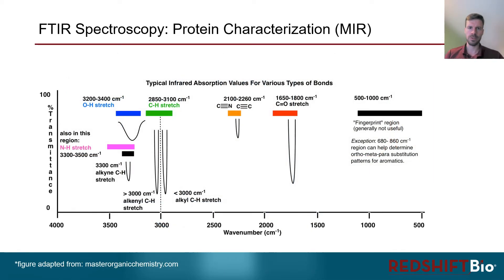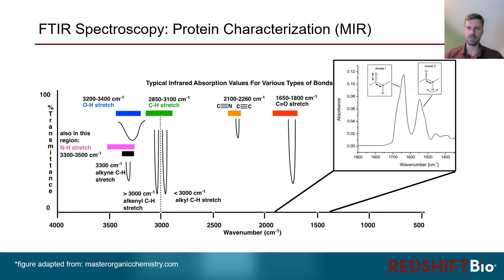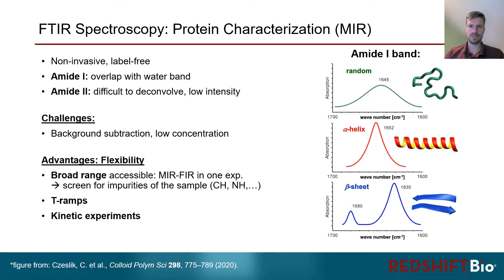Typical infrared absorption bands of various types of bonds are presented here in this figure, and they can all be used for understanding the structure and composition of your sample. But for protein analysis, the most relevant bands are the so-called amide-1 and amide-2 bands, which appear between 1500 and 1700 wavenumbers. Both of those vibrations stem from the protein backbone and are therefore reporters for the protein's secondary structure. Therefore, FTIR is not only a non-invasive but also a label-free method for protein structural analysis.